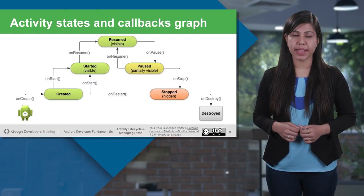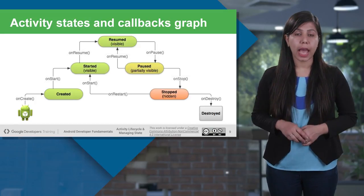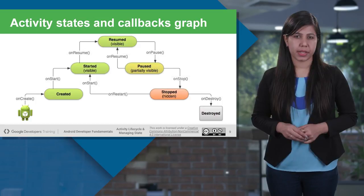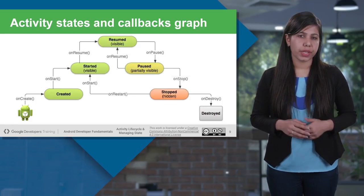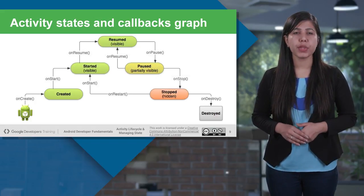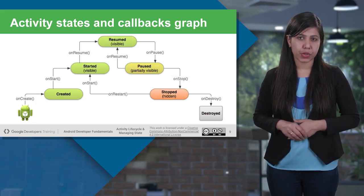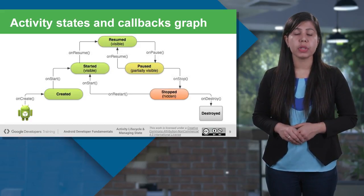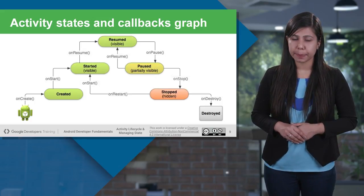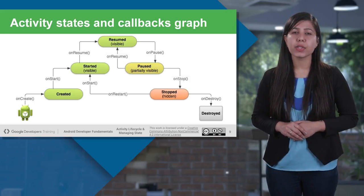Let's understand the activity states through the callbacks graph. Going through onCreate, onStart, onResume — the activity is running. If the activity becomes paused, for example someone clicks a button launching another activity on top, and then hits the back button, onResume is called and your activity is running again. If the application is stopped and the user has completely left, onStop may get called. When the user relaunches your application, onRestart is likely called — which restarts but doesn't recreate the application because it's still in memory. Then onResume is called and your activity runs again.